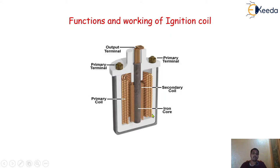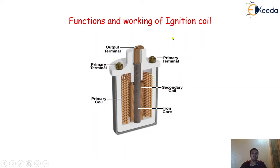Once it passes from the primary winding, it will forward to the contact breaker as well as that particular capacitor, and that EMF will reverse back and come inside the secondary winding, where the voltage will be boosted up from about 5000 to 22000 volts because of the current supplied from the secondary coil. That high voltage will pass from the output terminal to the distributor system, as discussed in the last video.